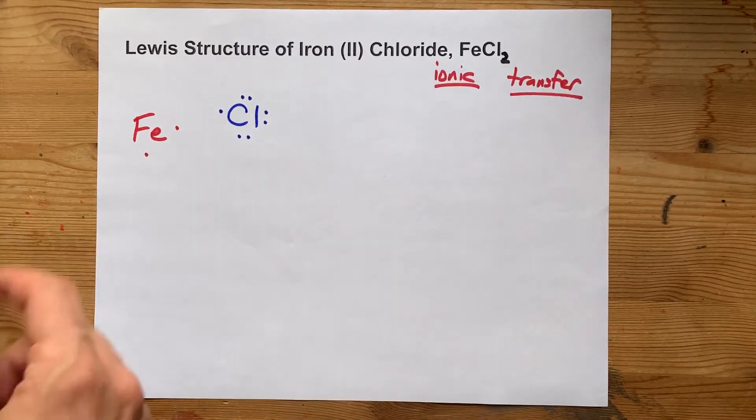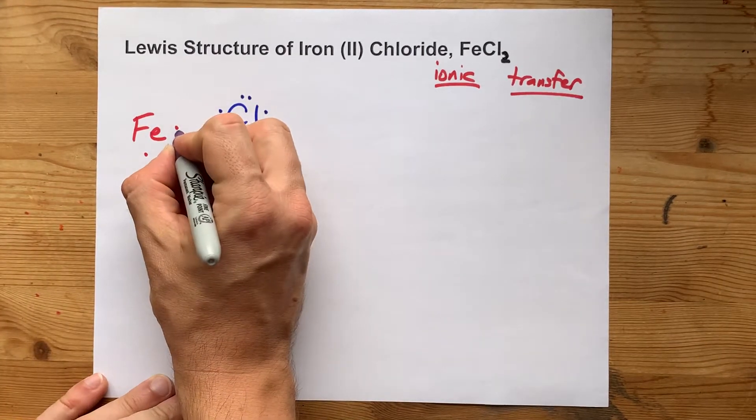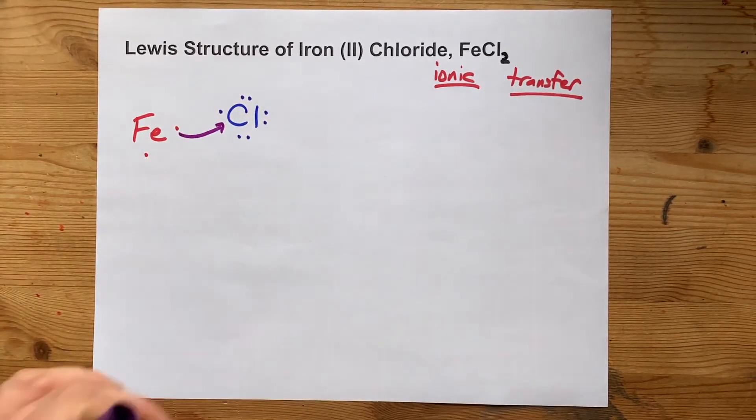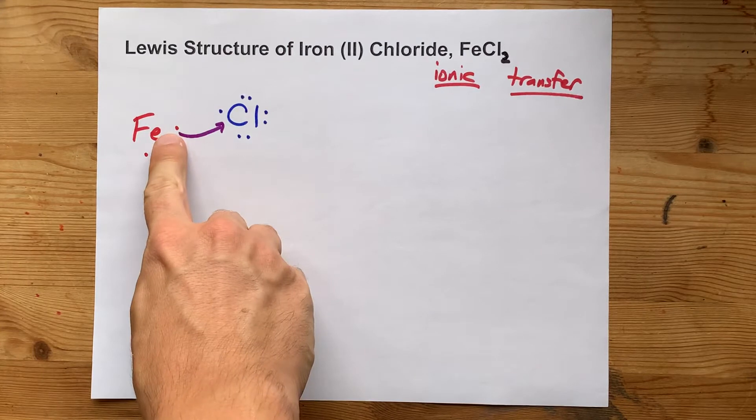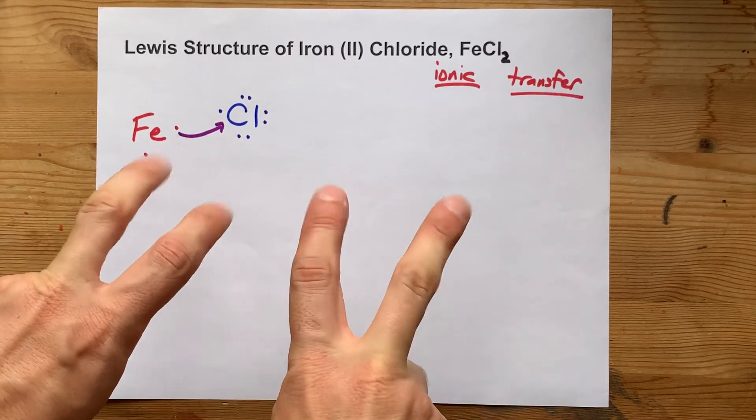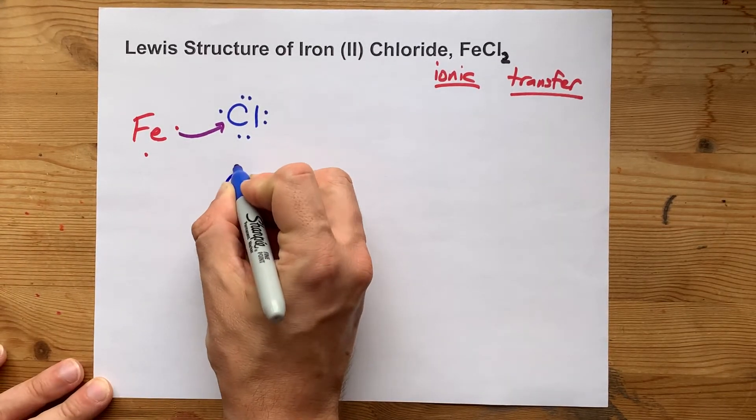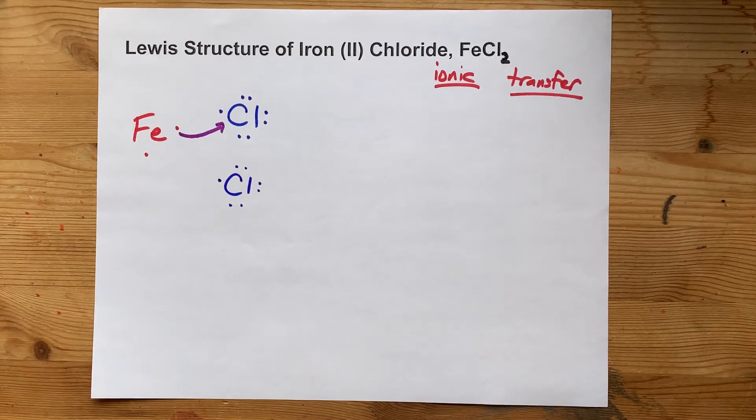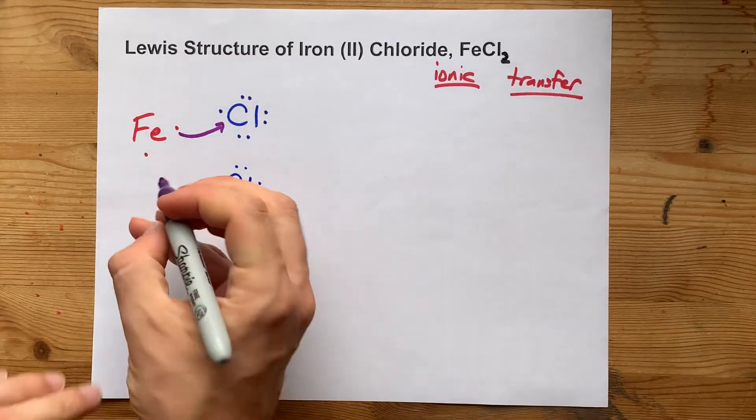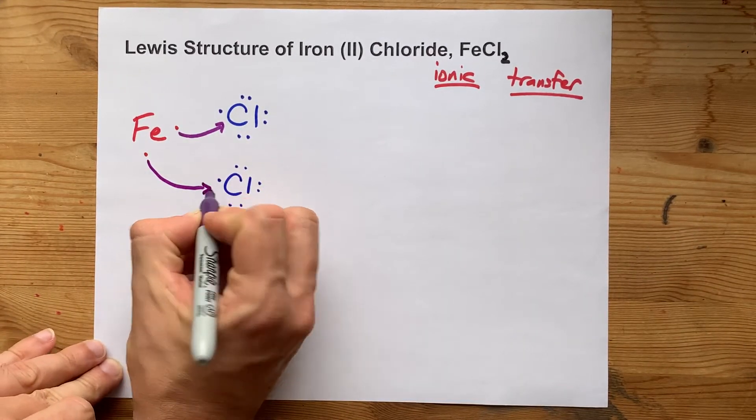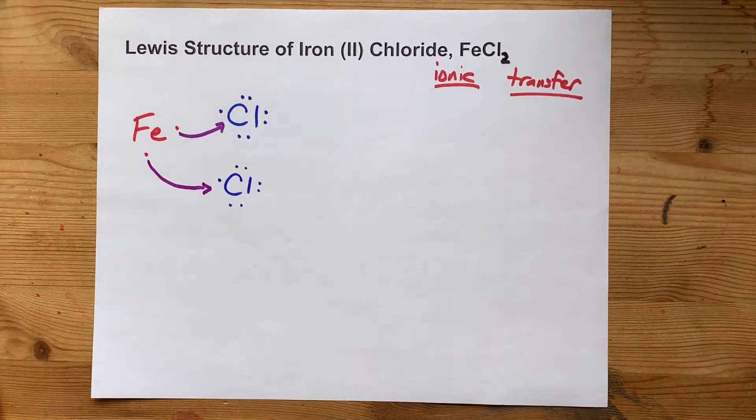And the process here is that iron, the metal, gives its electrons away to the non-metal. Now, this one electron will complete the octet on this chlorine, but where's the other electron going to go? Well, the answer is another chlorine atom with its 7 valence electrons appears from the wild, and iron's second electron is donated there.